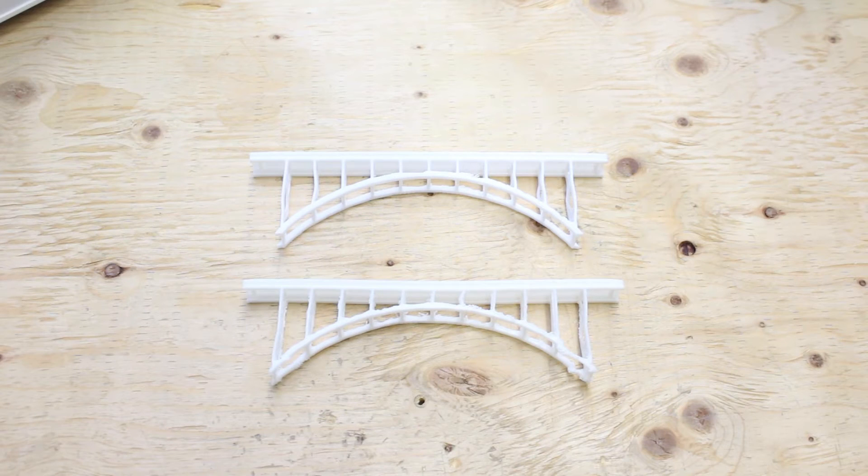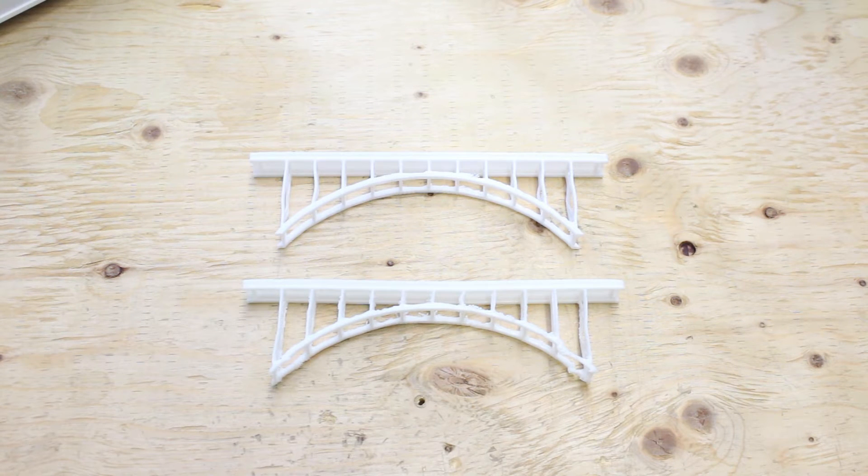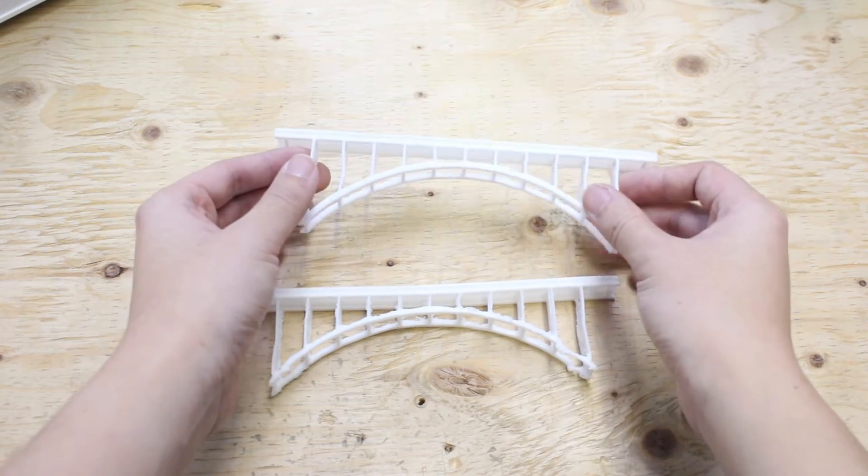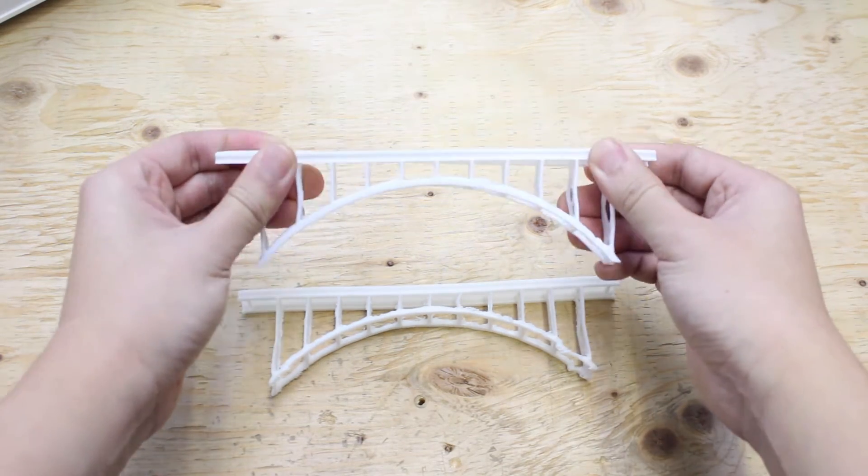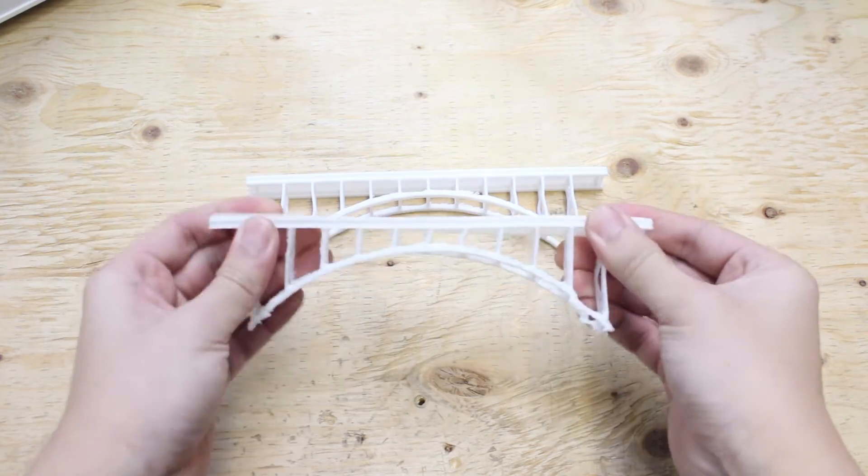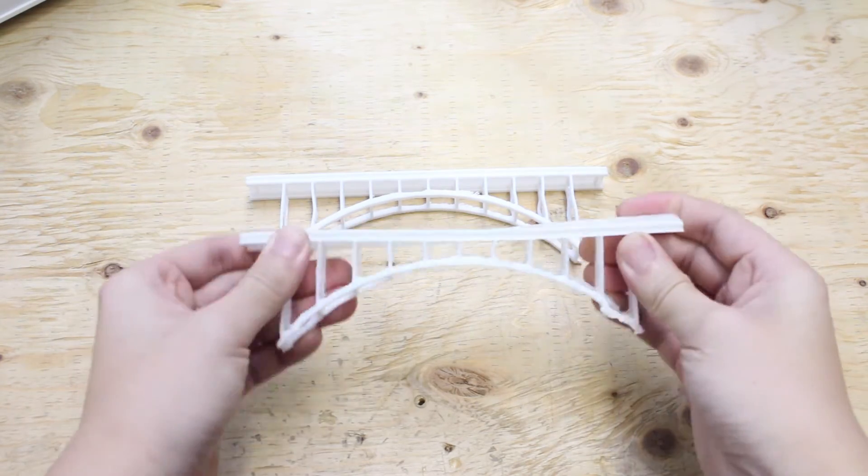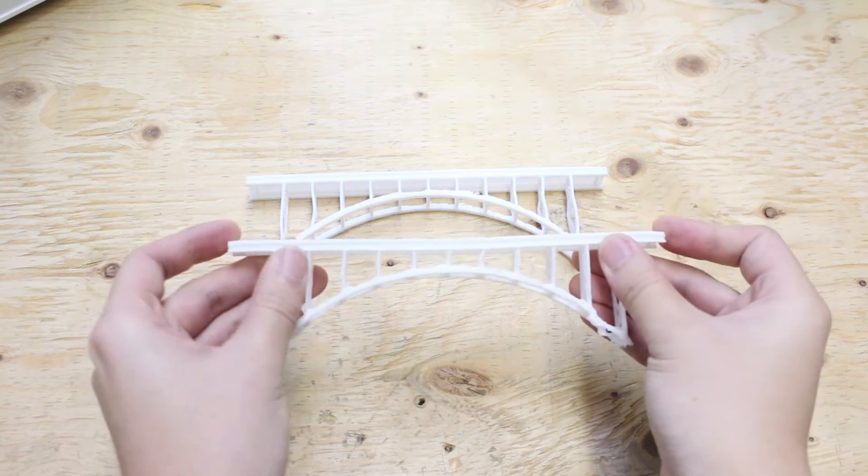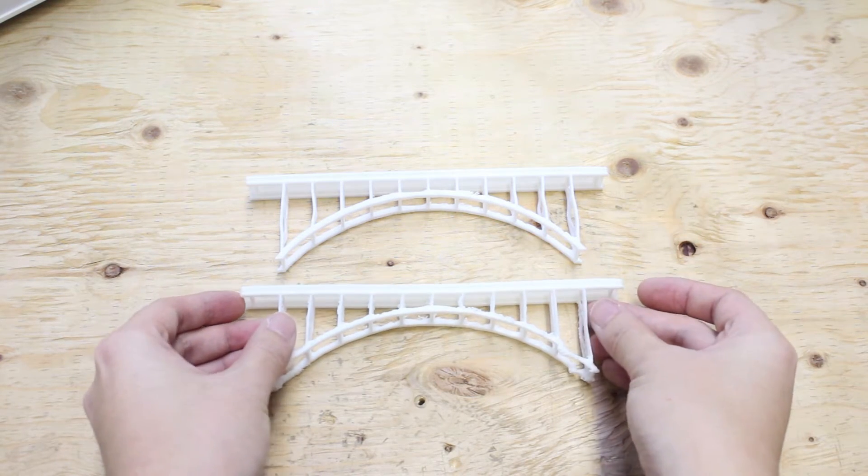Before we get started with our experiment, let's show you the difference between the HT filament and our line of PLA filament. We can see here the regular PLA filament is a lot more rigid. I'm trying to twist here but it's not letting me, while the HT filament is a lot more flexible and possibly even stronger than regular PLA filament.